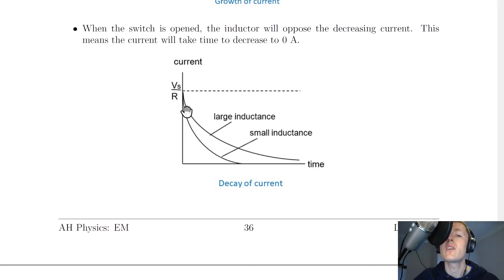And you'll notice that for an inductor of small inductance, it takes a shorter time to decay to zero, whereas for an inductor of larger inductance, it takes a longer time to decay to zero.